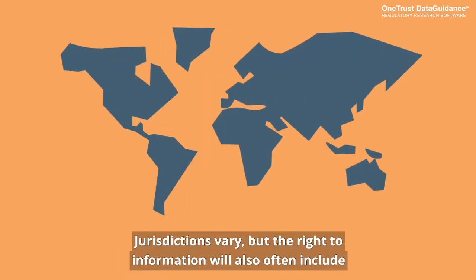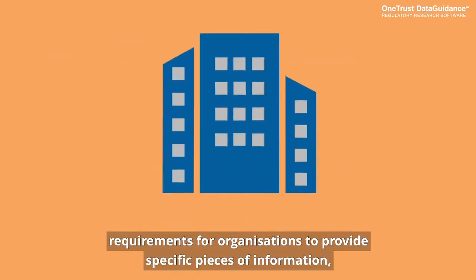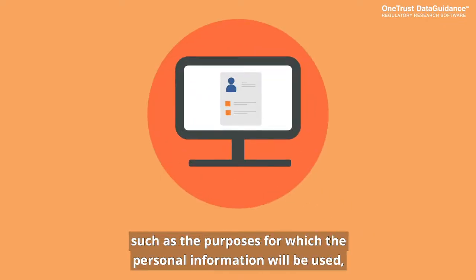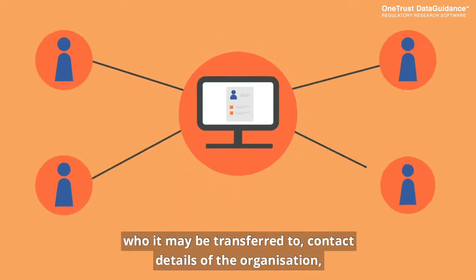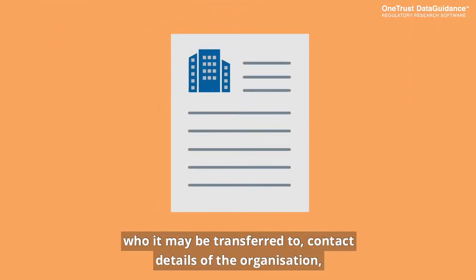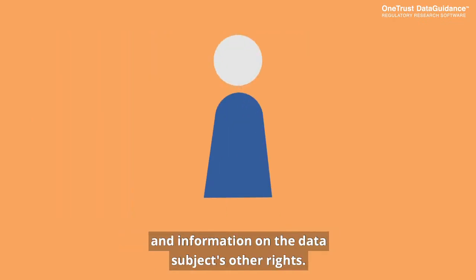Jurisdictions vary, but the right to information will also often include requirements for organizations to provide specific pieces of information, such as the purposes for which the personal information will be used, who it may be transferred to, contact details of the organization, and information of the data subject's other rights.